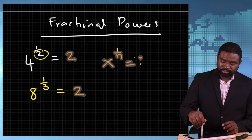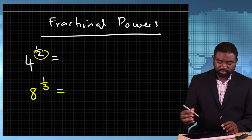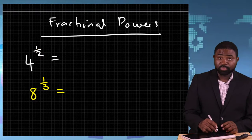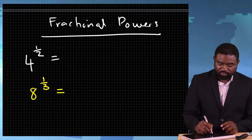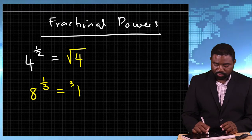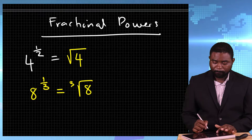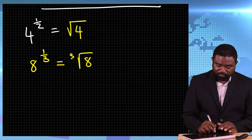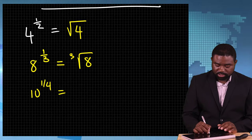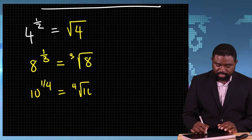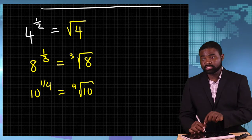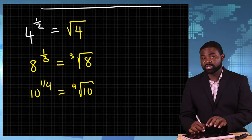So in essence, 4 raised to the power 1 over 2 is just the square root of 4. This is just the cube root of 8. Similarly, if you have 10 raised to the power 1 fourth, this is just the fourth root of 10, which is the number which, when multiplied by itself 4 times, will give rise to 10.